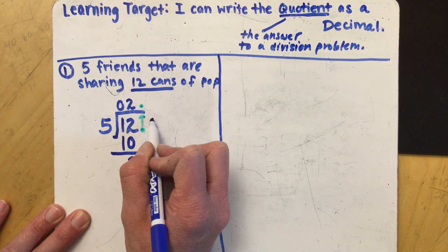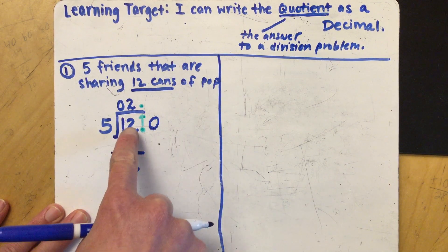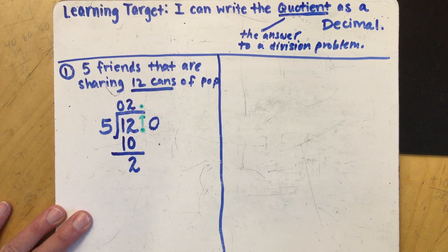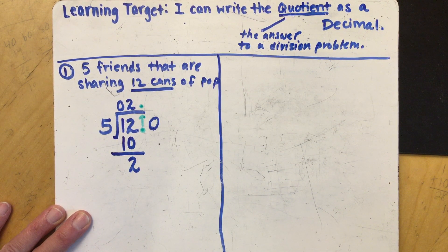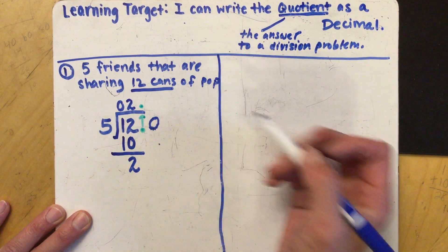So after we write our decimal and we bring it straight up, we're going to write a zero here. This does not change the value of our original dividend because any time we add a zero after a decimal point it just means that there's no value.